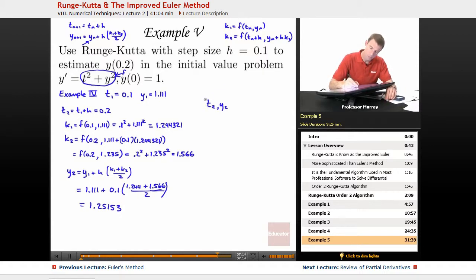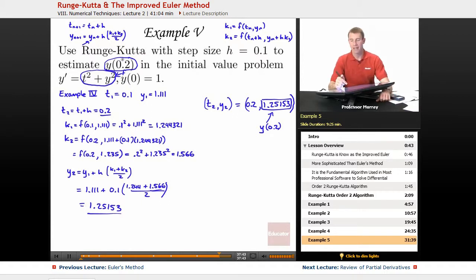Let me summarize here. t2, y2, according to what we just figured out. So t2 is 0.2 and y2 is 1.25153. And that is my answer as my estimate for y of 0.2. And that's what we were being asked for in the problem. So that means I'm done with the problem. But let me go ahead and go back and make sure that all the steps are totally clear there.